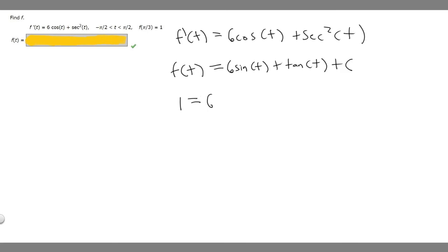So 1 is going to be equal to 6 times the sine of pi over 3 plus the tangent of pi over 3 plus c. So 1 equals, what is the sine of pi over 3? The sine of pi over 3 is going to be radical 3 over 2. That's just something you should know based on the unit circle.